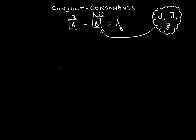We have three little symbols — we don't write the actual full letters. So we don't write, for example, lala with ha-ha at the bottom in full form. We have special symbols dedicated to the conjunct consonants for Punjabi.